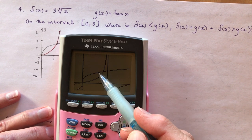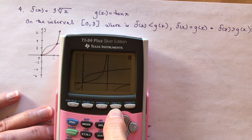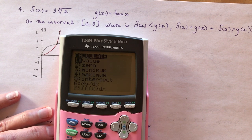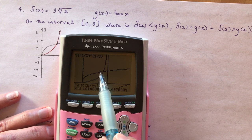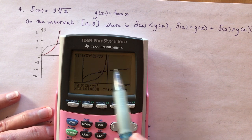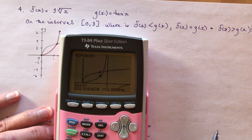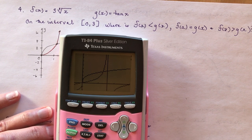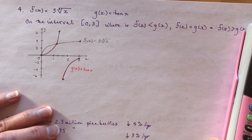To find the intersection point, go to Second, then Calculate (above the Trace button), and select Intersect which is number 5. It asks for the first curve — hit Enter, it jumps to the second curve — hit Enter again, then it says Guess — hit Enter one more time. It gives the intersection point as x = 1.272367...